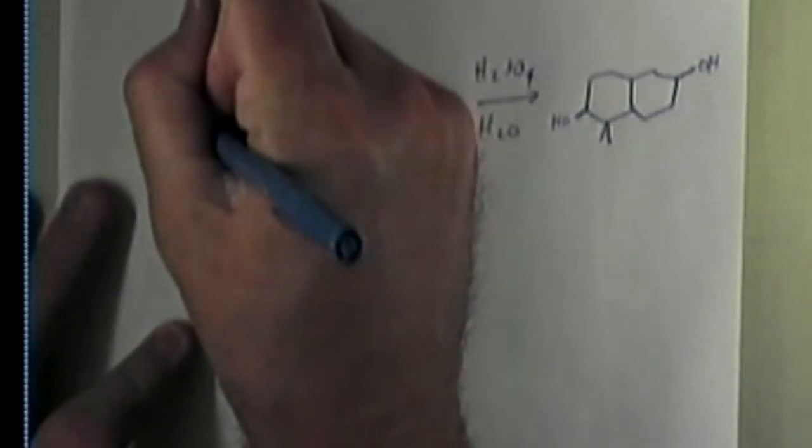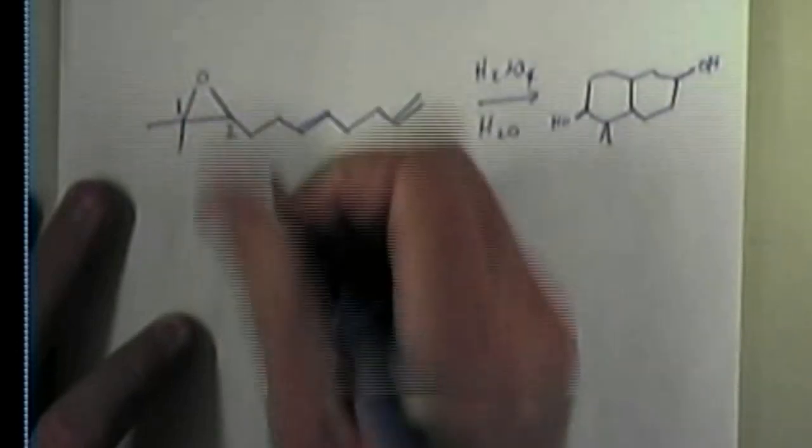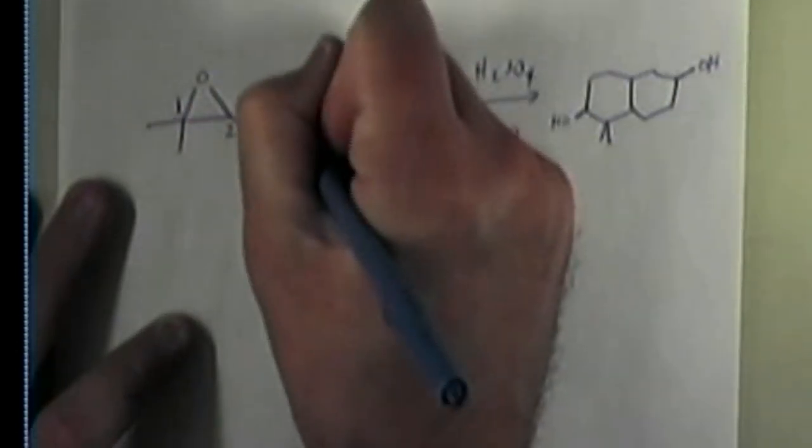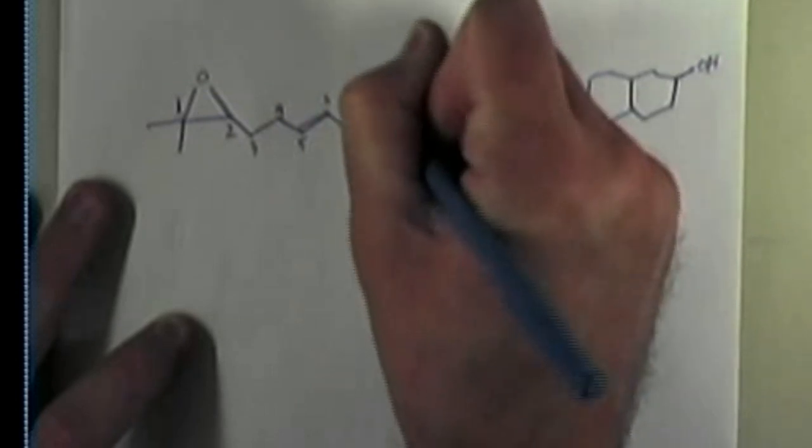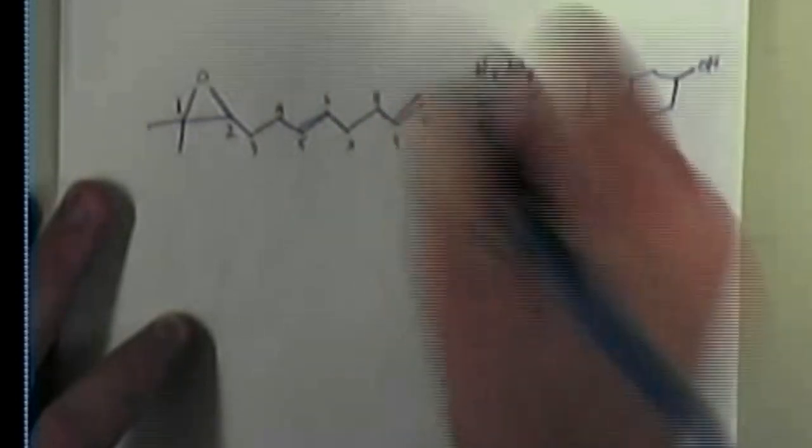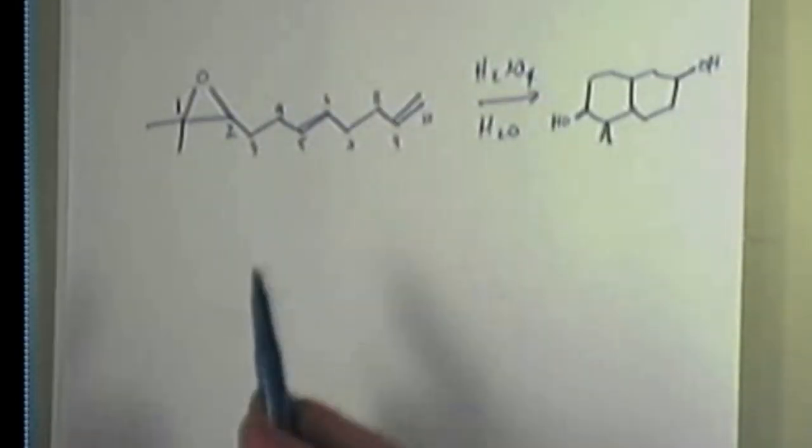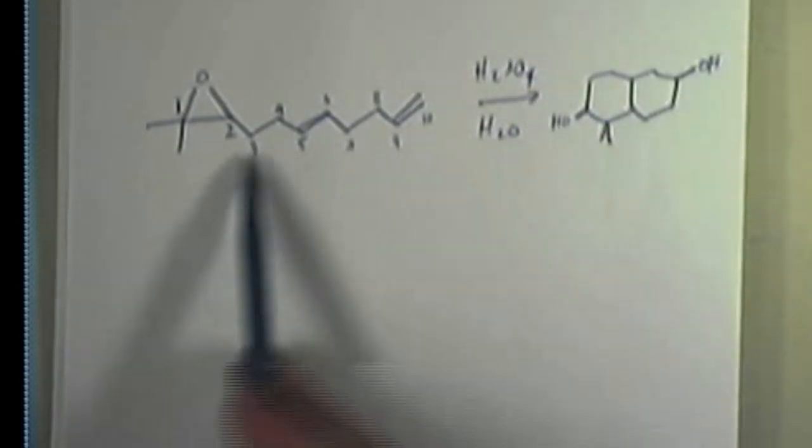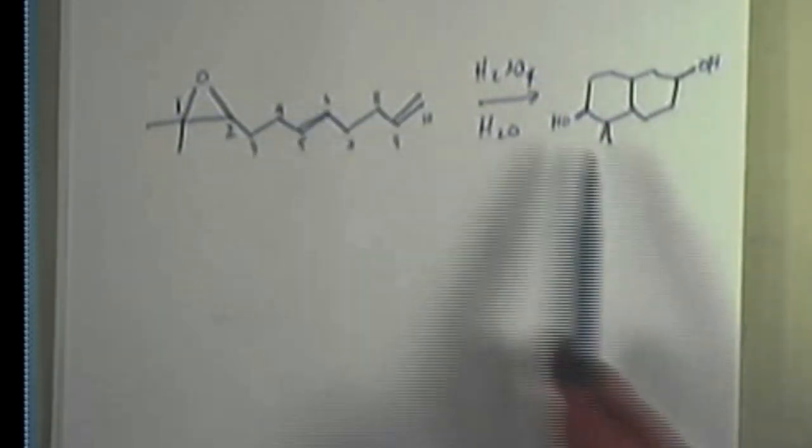So what I'm going to do is I'm just going to number the carbon atoms. One, two, three, four, five, six, seven, eight, nine, ten. And see if you can somehow figure out, based on what this looks like, where some of the stuff is going in the product.